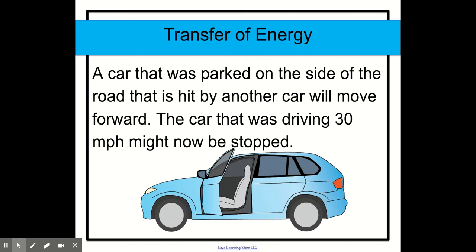A car that was parked on the side of the road that is hit by another car will move forward. The car that was driving 30 miles per hour might now be stopped. So the car was stopped on the road. It was not moving but then it gets hit by another car and it moves forward.